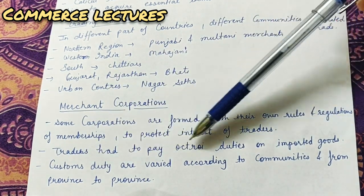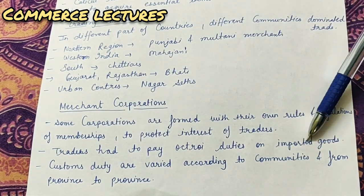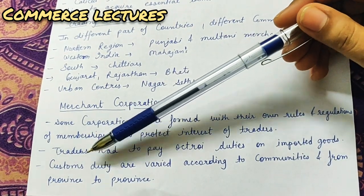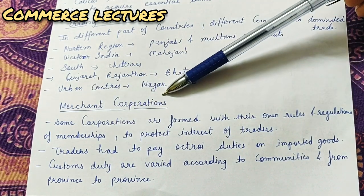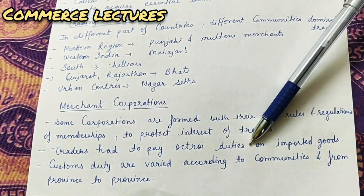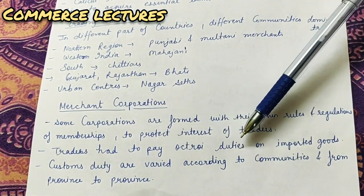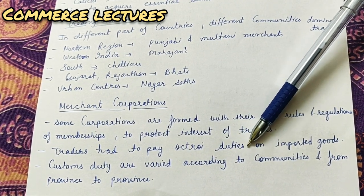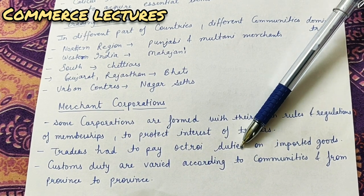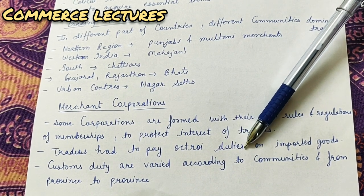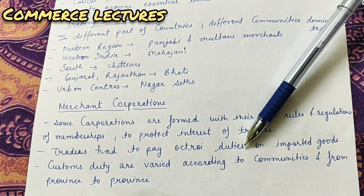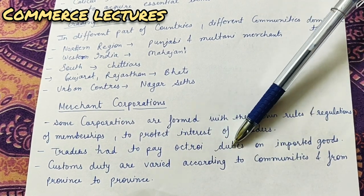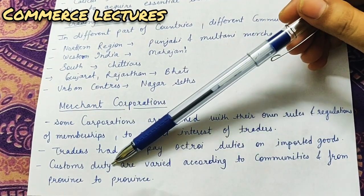Traders had to pay octroi duties on imported goods. Traders had to pay octroi duties to these Merchant Corporations. Octroi duty is a tax levied by the state government whenever any good enters the state from another place - basically for selling purposes, not for consumption. That is what octroi duties are.